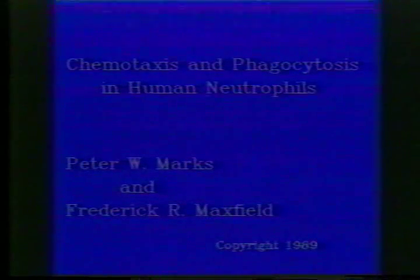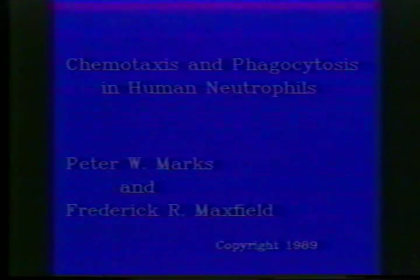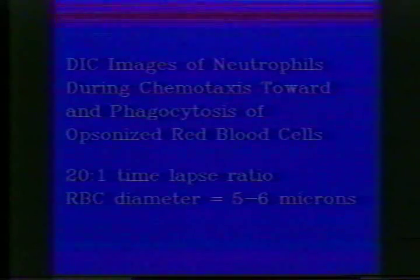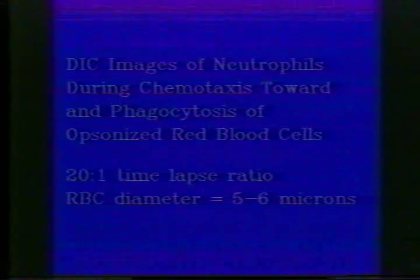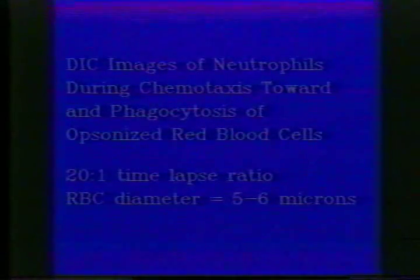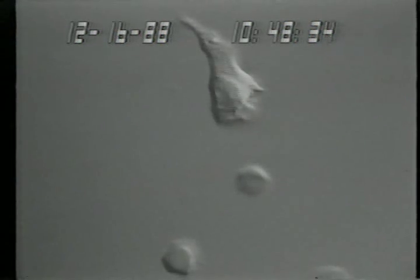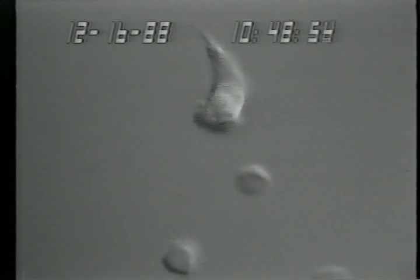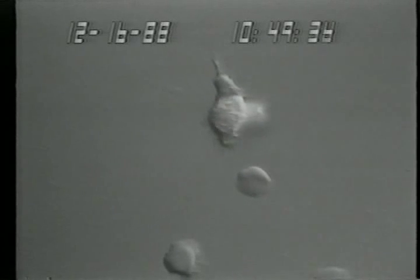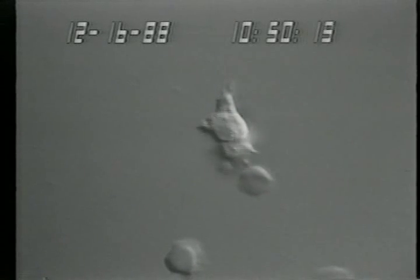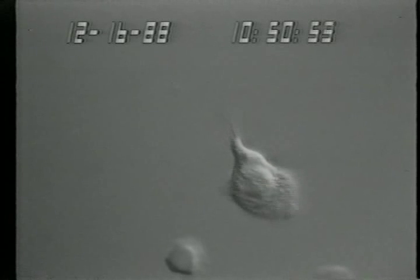Around opsonized erythrocytes covalently attached to a polylysine-coated glass surface, activation of the complement cascade present in human serum creates a gradient around these cells. DIC images of neutrophils during chemotaxis and phagocytosis are shown at 20 minutes real time. The neutrophil has a diameter of about 5 microns and migrates toward and engulfs the target in a manner similar to that of phagocytosis of a free particle.